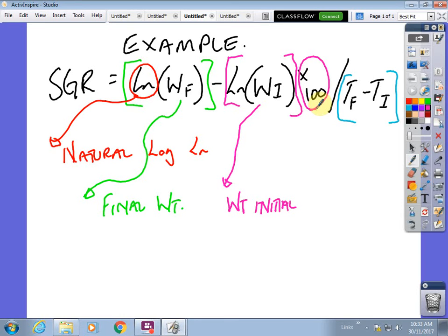Over here we've got time, not a date but a specific number. Time at the end of the growth period and time at the start. So time at the end is TF, time at the start is TI - final and initial. That makes sense.